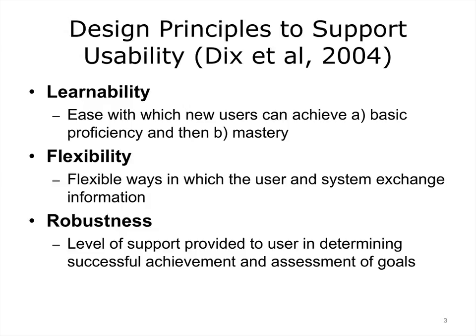We'll start by introducing a set of design principles to support usability, drawing on the work of Dix and colleagues. They articulate three top-level principles which can be further decomposed. Learnability refers to the ease with which new users can achieve basic proficiency using a system, and hopefully mastery at some point in time. Learnability is especially important in health information technology because systems are often very complex. Flexibility refers to the ways in which the user and system exchange information, for example, through dialogue box exchanges. Robustness is the level of support provided to the user in determining whether they successfully achieve their goals, including discerning system state and recovering from errors.